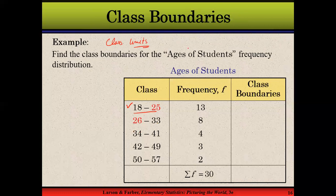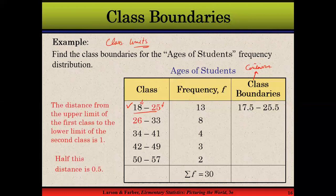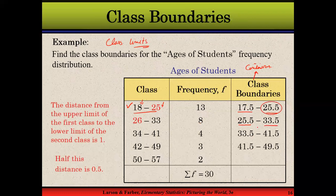Class boundaries are continuous because they don't leave any gap between them. What we need to do is deduct a half point from the lower class limit and add that half point to the upper class limit. For example, we deducted half a point from 18 and that became 17.5, and we added that half point to the upper class limit so 25 became 25.5. Again, 26 becomes 25.5 because we deduct half a point from 26, and 33 becomes 33.5. The same applies to the other classes — we have converted the class limits into class boundaries.